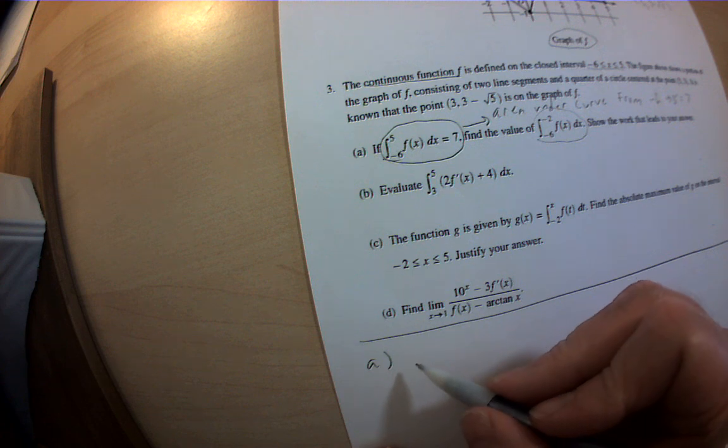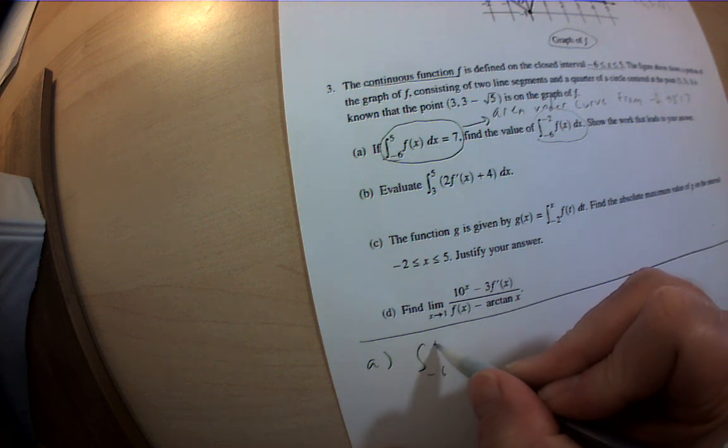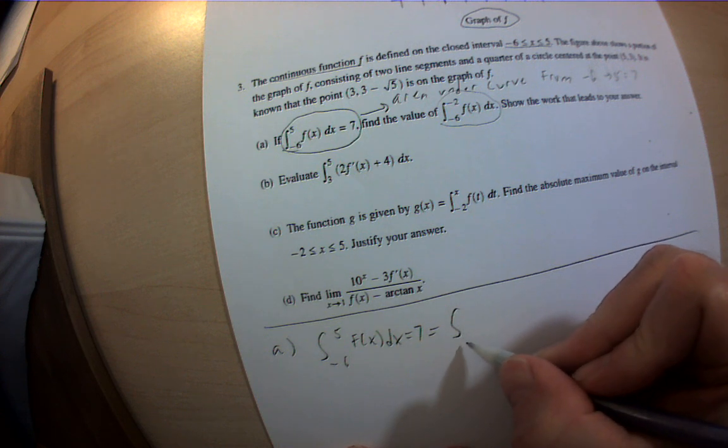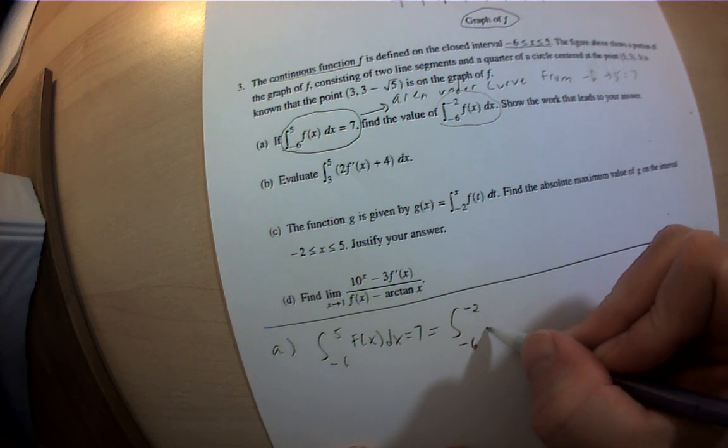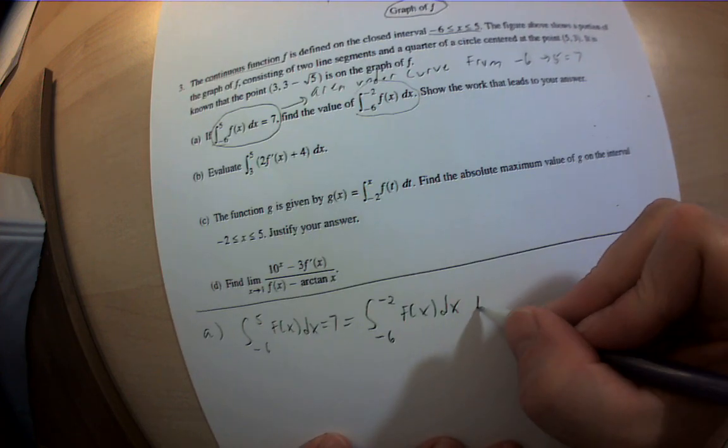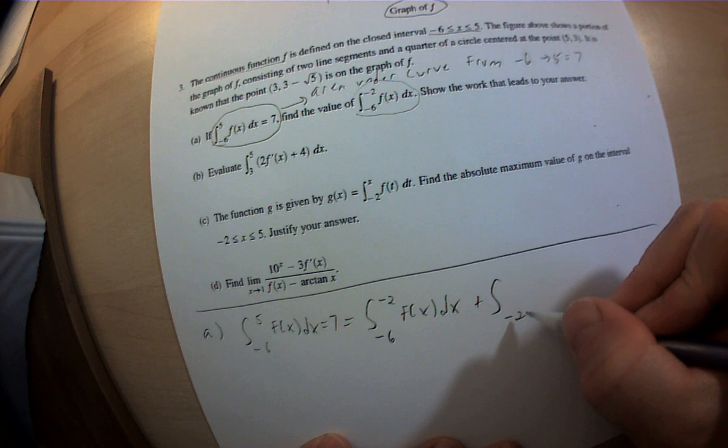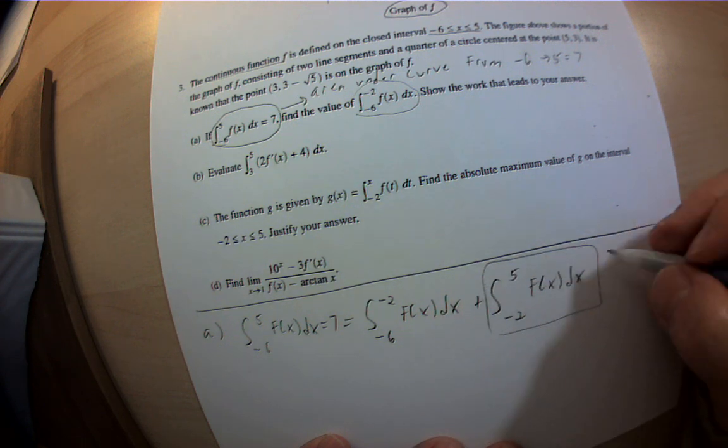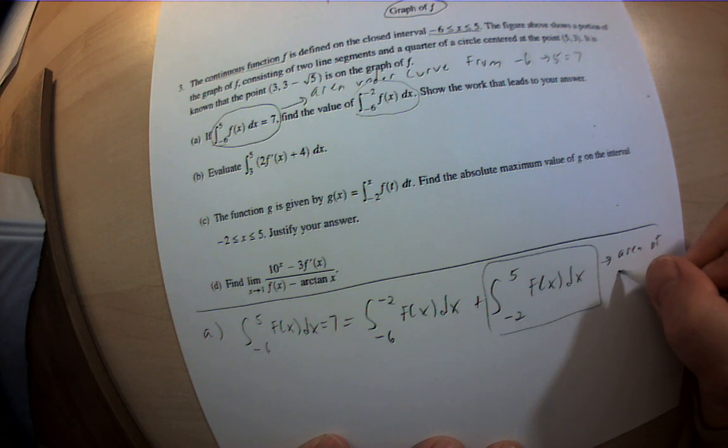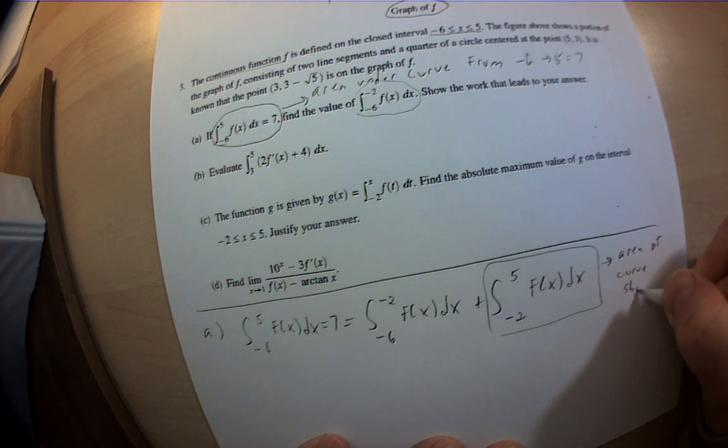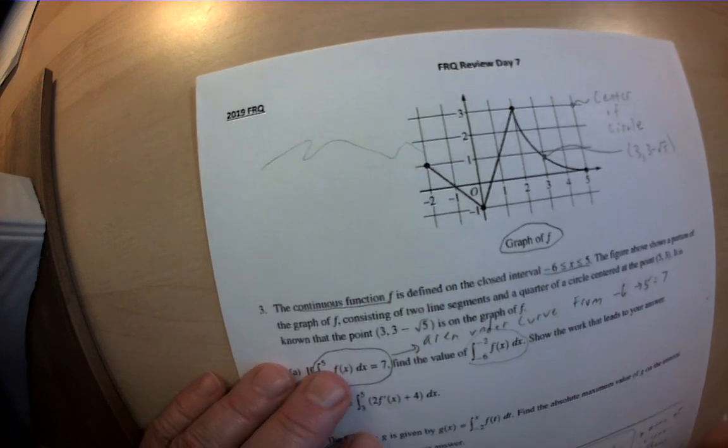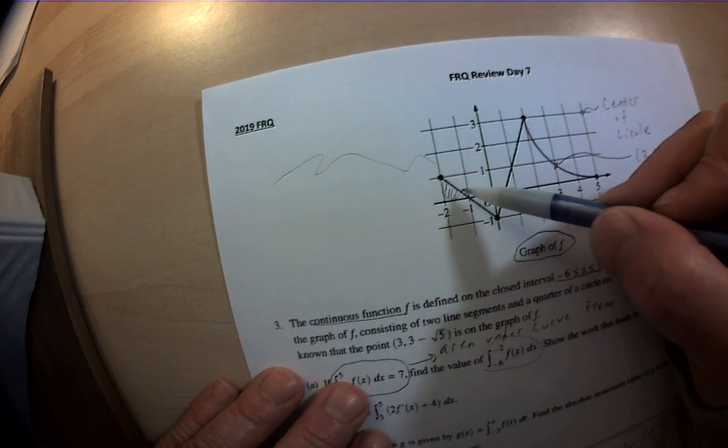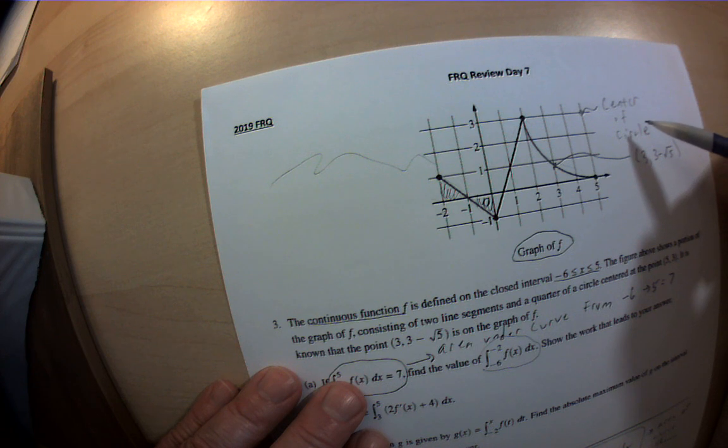So I know the integral from negative 6 to 5 of f(x) dx equals 7. That equals the integral from negative 6 to negative 2 of f(x) dx, that's what I'm trying to find, plus the integral from negative 2 to 5 of f(x) dx. So this is the area of the curve shown. If I go up here and look, this area and this area are equal and opposite. They cancel each other out.